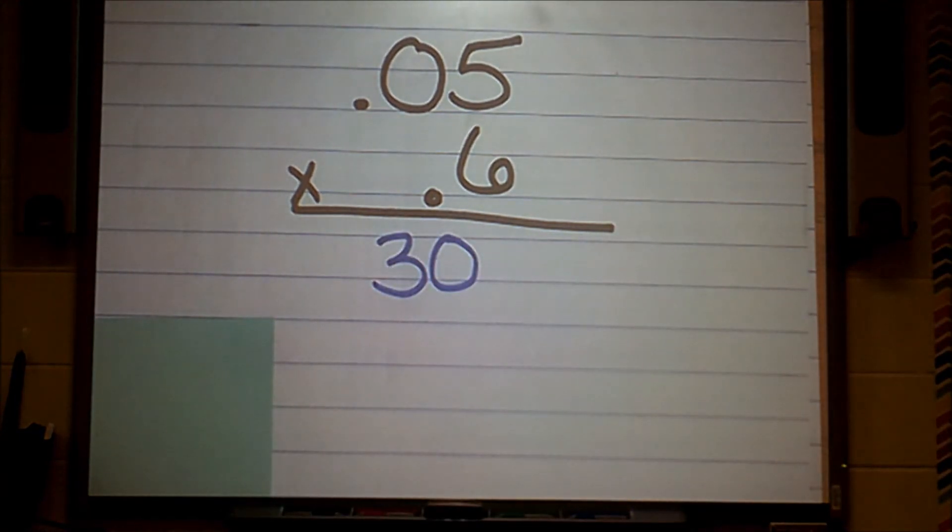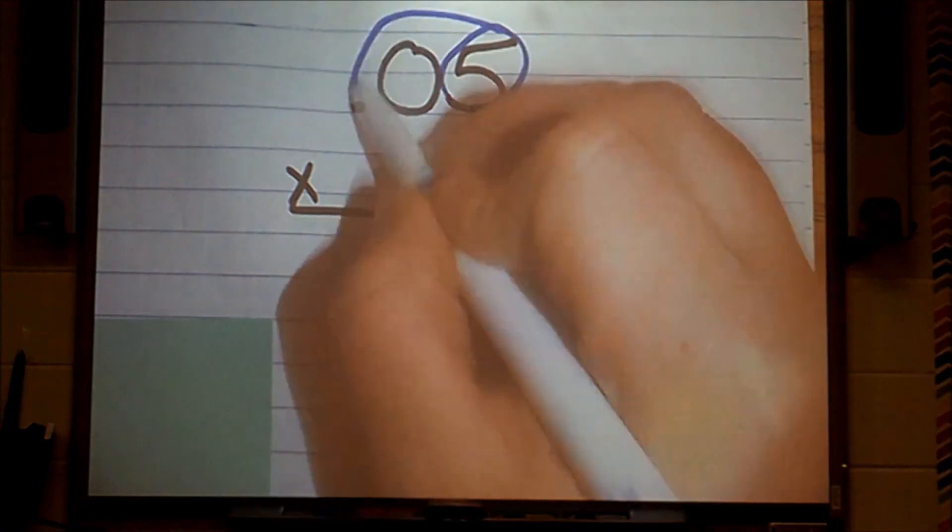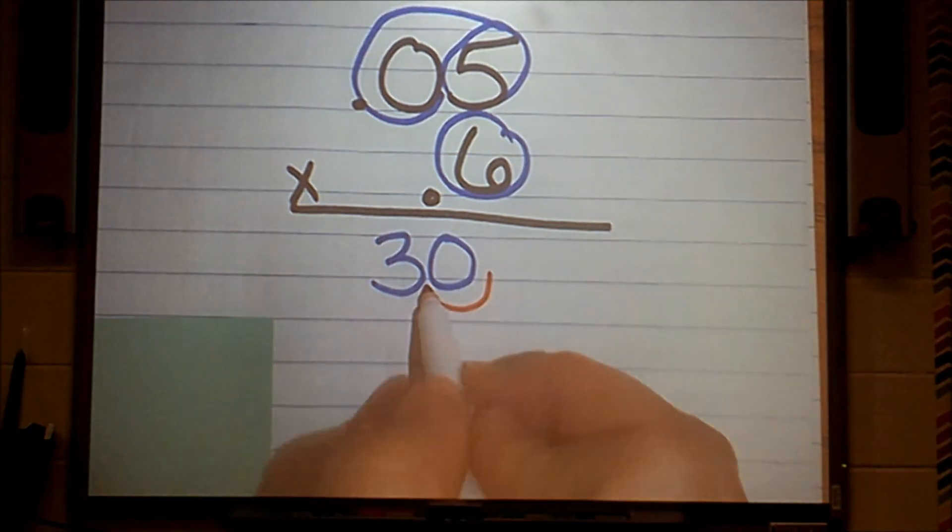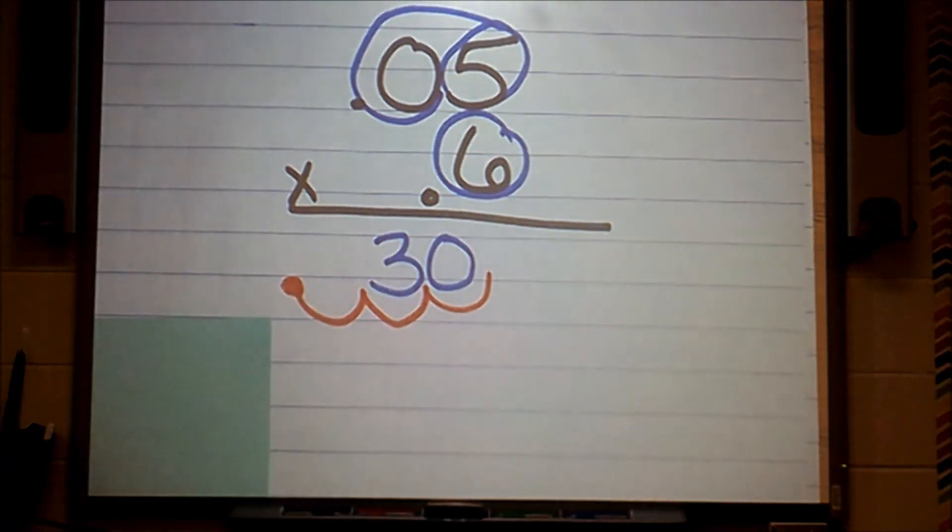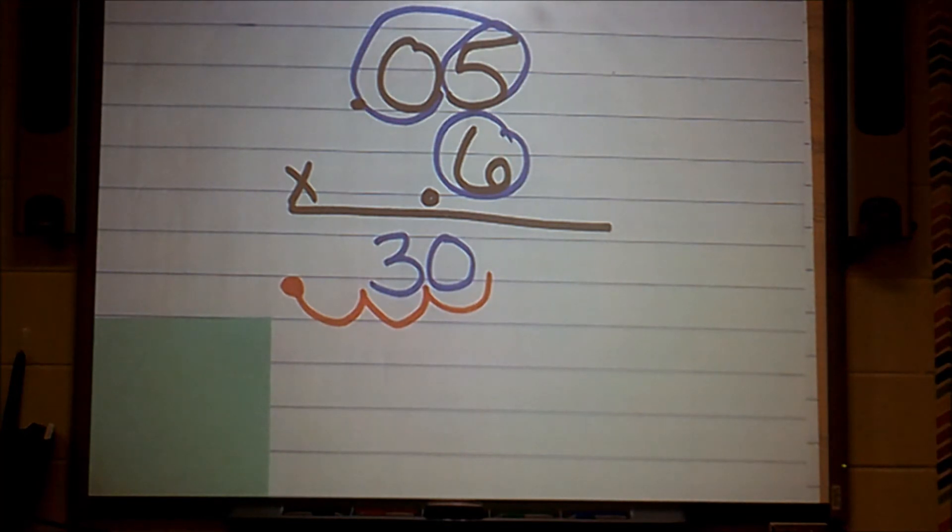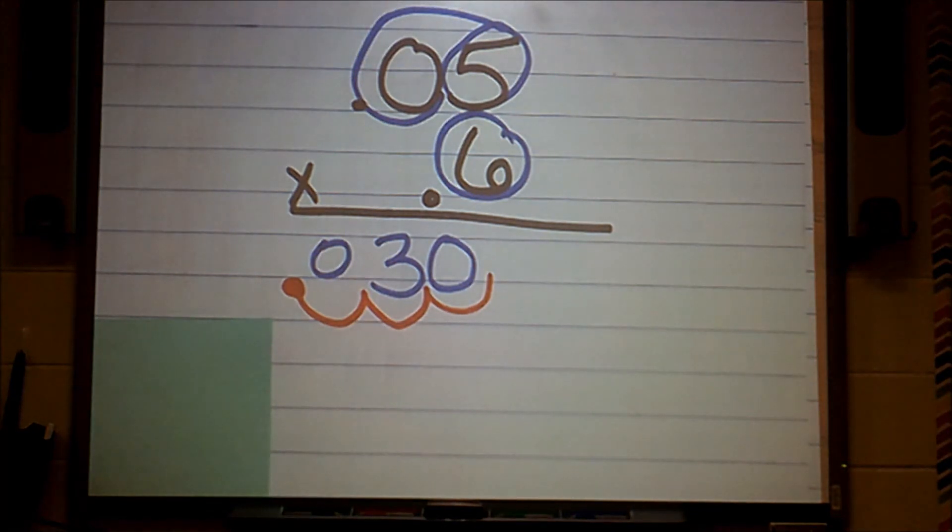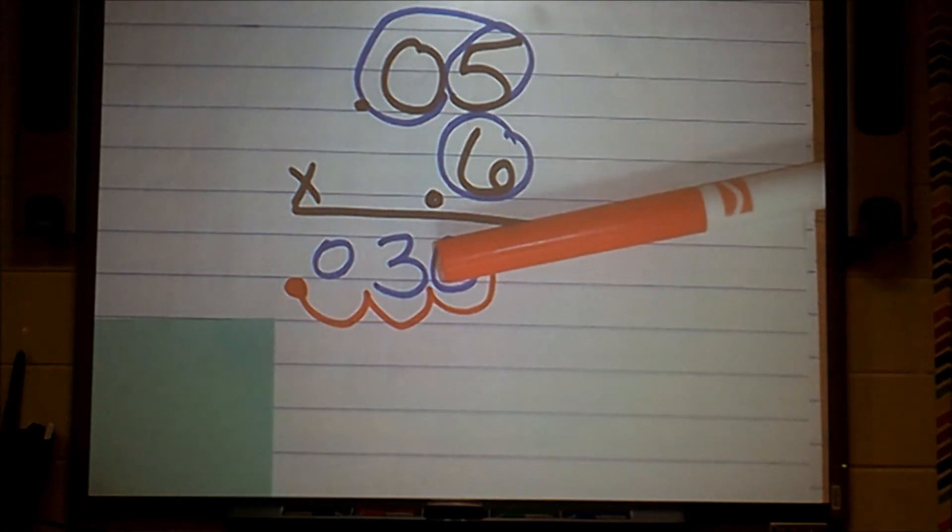My next step is to count the number of digits that live behind my decimal. One, two, three. So I have to bump in three place values to make sure I have three digits that live behind my decimal. And just like we did in the previous problem, I'm going to have to add a zero. Giving me a final product of 0.030 or 30 thousandths or 3 hundredths. Because that zero on the end is not necessarily needed. It doesn't change my answer.